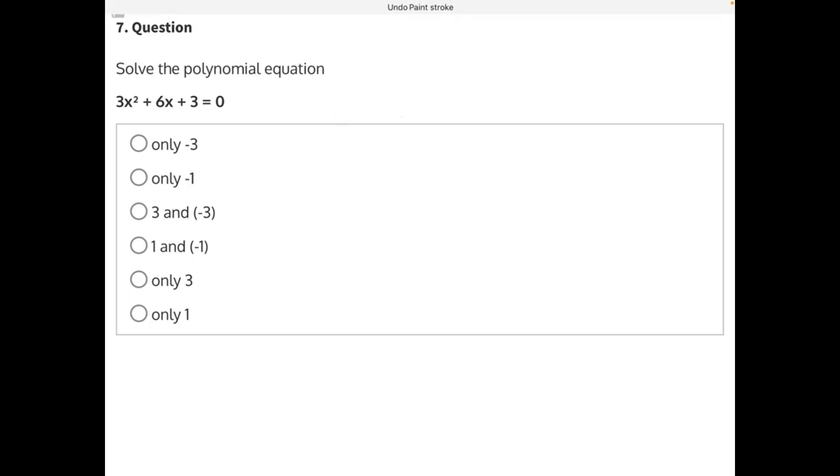But to factor a polynomial that has an a value greater than 1, the best method is factoring by grouping. So let's start by finding a times c, which is 3 times 3, which will give us 9. And now let's list all the factors of 9, all the numbers that multiply together to give us 9: 1 and 9, and 3 and 3, that's it.